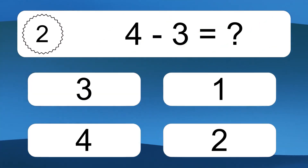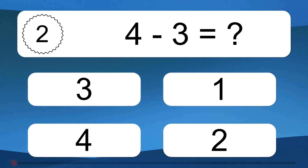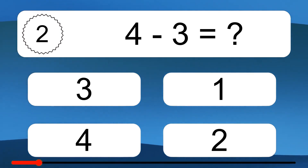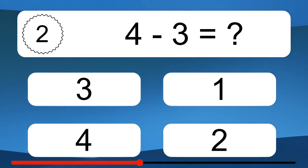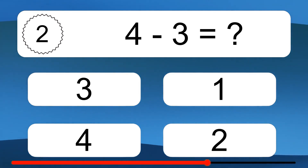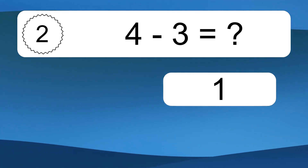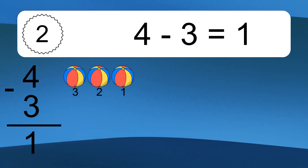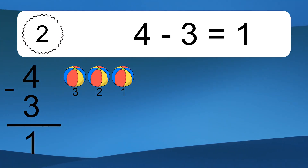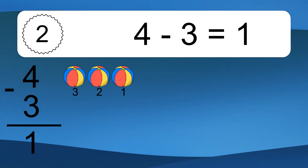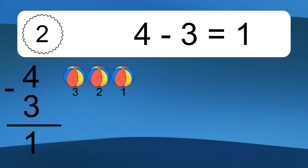4 minus 3 equals what? 4 minus 3 equals 1. Let's count it: 3, 2, 1.